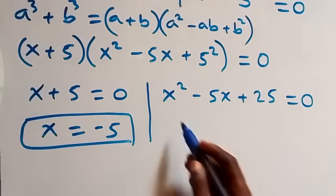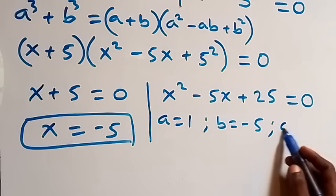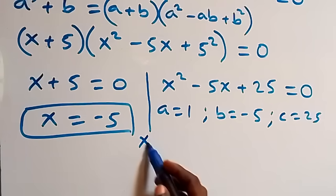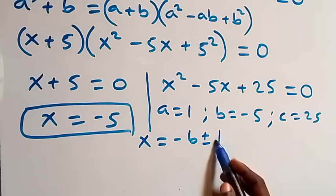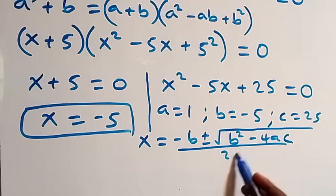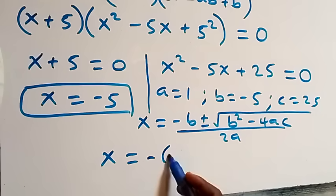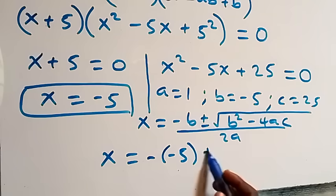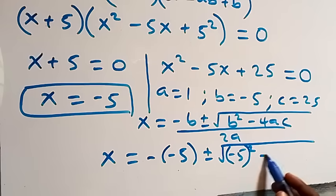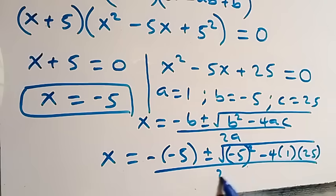From the first factor, x = −5, which is a real solution. For the quadratic x² − 5x + 25 = 0, we have a = 1, b = −5, c = 25. Applying the quadratic formula: x = (−b ± √(b² − 4ac)) / 2a, this becomes x = (5 ± √(25 − 4·1·25)) / 2.